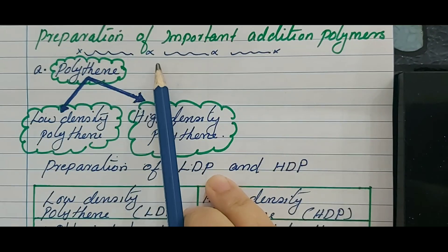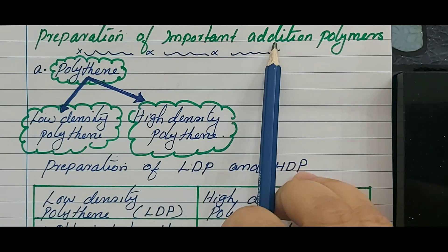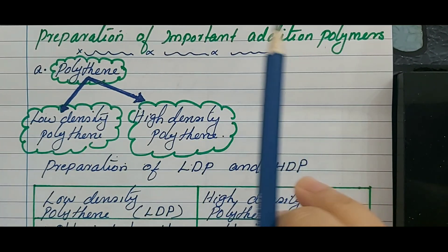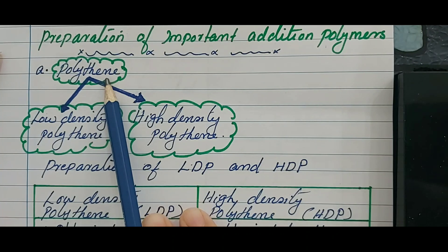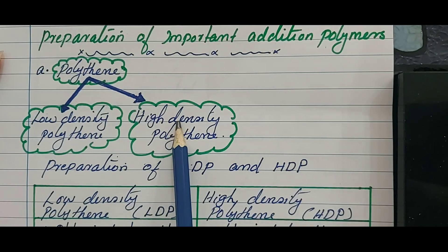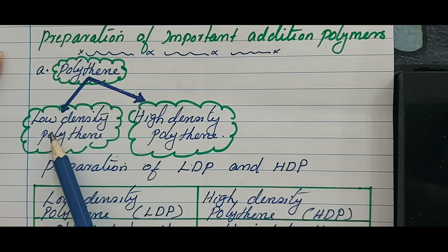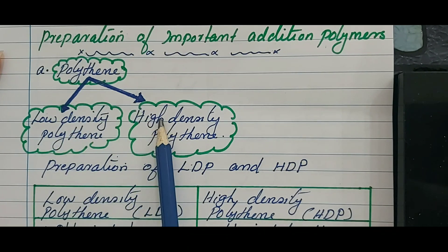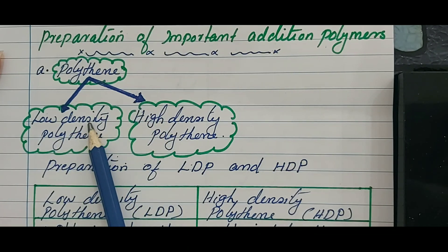Hello everyone. In this video I am going to discuss about addition polymers. We'll start with the preparation of important addition polymers. First we will discuss polythene. There are two types of polythenes: one is high density polythene and the other one is low density polythene.